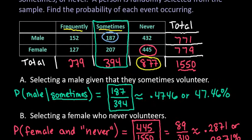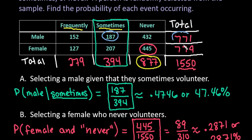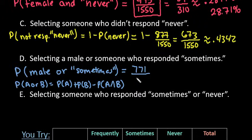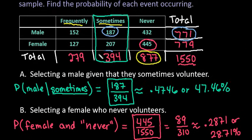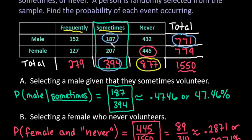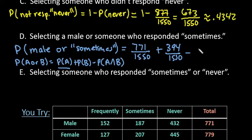If we go back up here, we can see that of our males, we had a total of 771 males, so we would do 771 divided by 1550. That would be our probability of being male. Then we would add to it the probability of answering sometimes, so we had a total of 394 people that responded with sometimes over 1550. And then we would subtract the overlap, so the and part - the and part would be the 187, so we would subtract 187 over 1550.